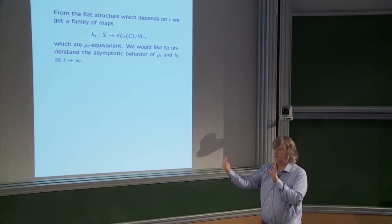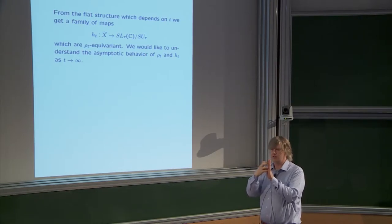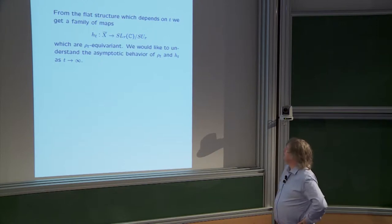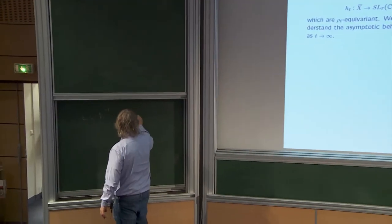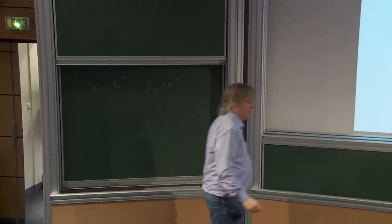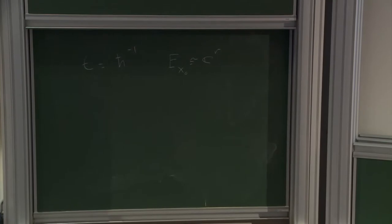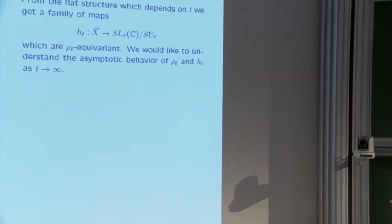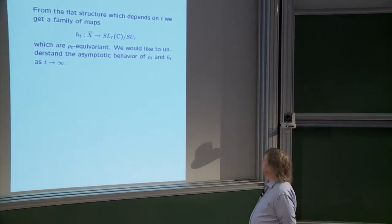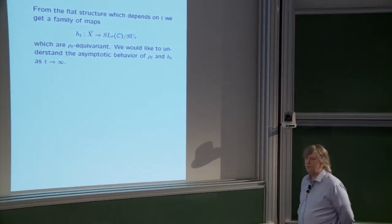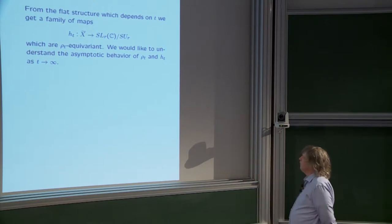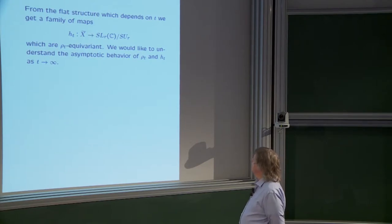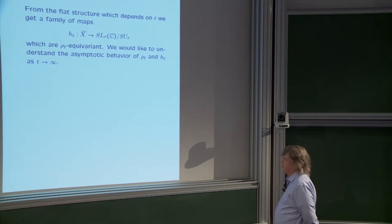If we transport the metric by the flat transport back to the base point, we get a metric on the fiber of E over the base point. Fixing a trivialization E_{x_0} ≅ ℂ^r, we can think of this as a map to the symmetric space SL(r,ℂ)/SU(r). We get a map H_t from X̃ into the symmetric space, which is ρ_t-equivariant. This is not necessarily a harmonic map, but it's supposed to make you think of a harmonic map, as in Hitchin theory.